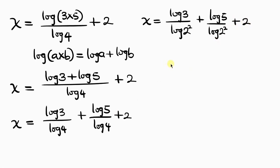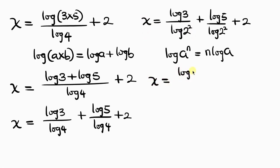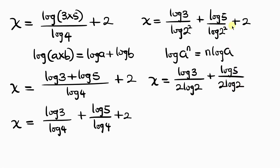Our next step will be to apply the property log(a^n) = n·log(a) to the denominator. So log(2²) becomes 2·log 2, giving: x = log 3 over (2·log 2), plus log 5 over (2·log 2), plus 2.